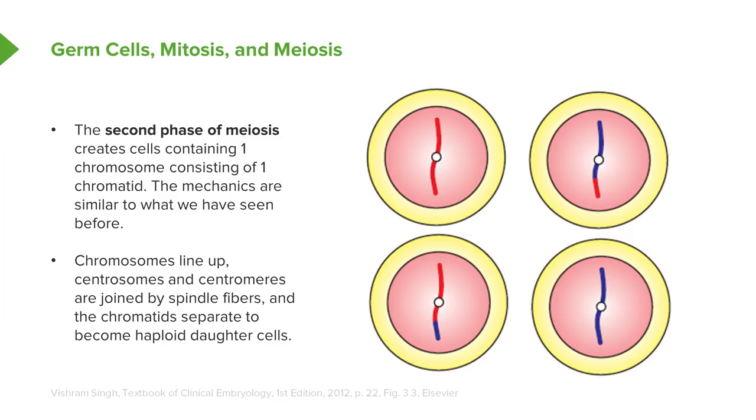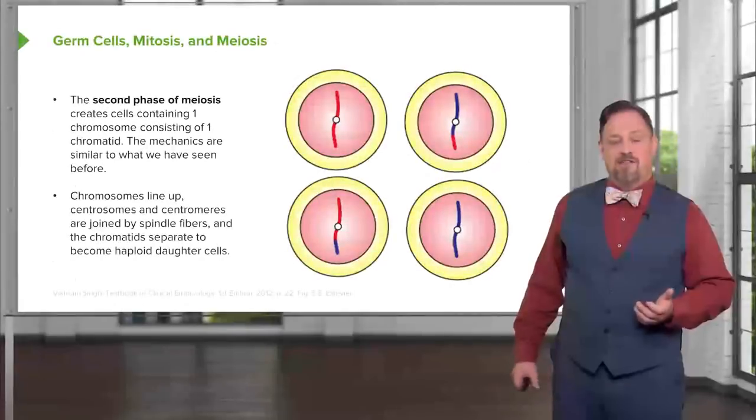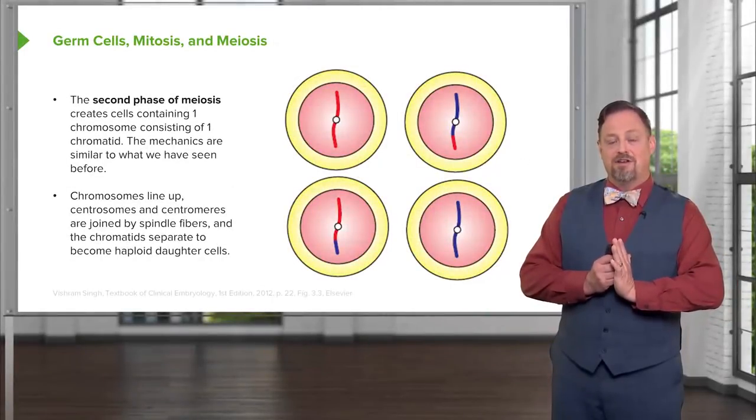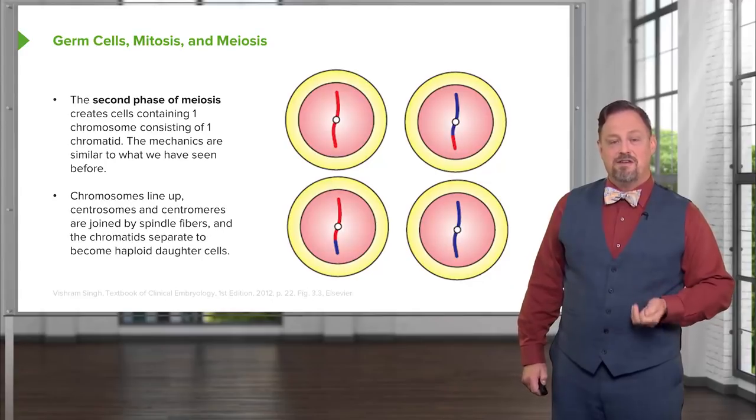And the end result are four daughter cells from one progenitor germ cell. These are very genetically dissimilar to the chromosomes of the parent. When they combine with a germ cell from another parent, we get a new and unique individual beginning to develop.